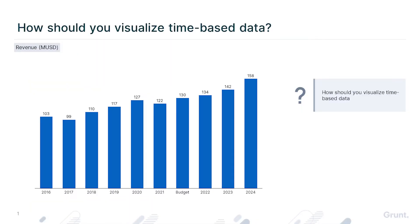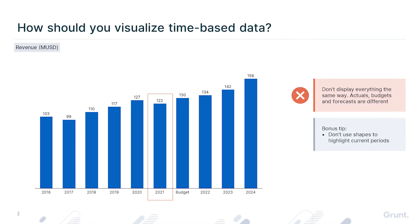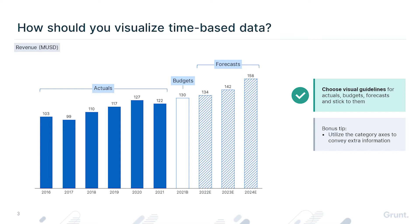We have the following chart and notice that we have some actual values, a budget value, and forecast values. A common mistake is to display everything the same way. I don't recommend this since it's so hard for your users to understand your data quickly. It doesn't help to highlight the current period with a shape either. Instead, design a system for how to display actual values, budget values, and forecasted values. When you have this visual system in place, stick with it so your audience can learn to recognize it. That makes your charts memorable.